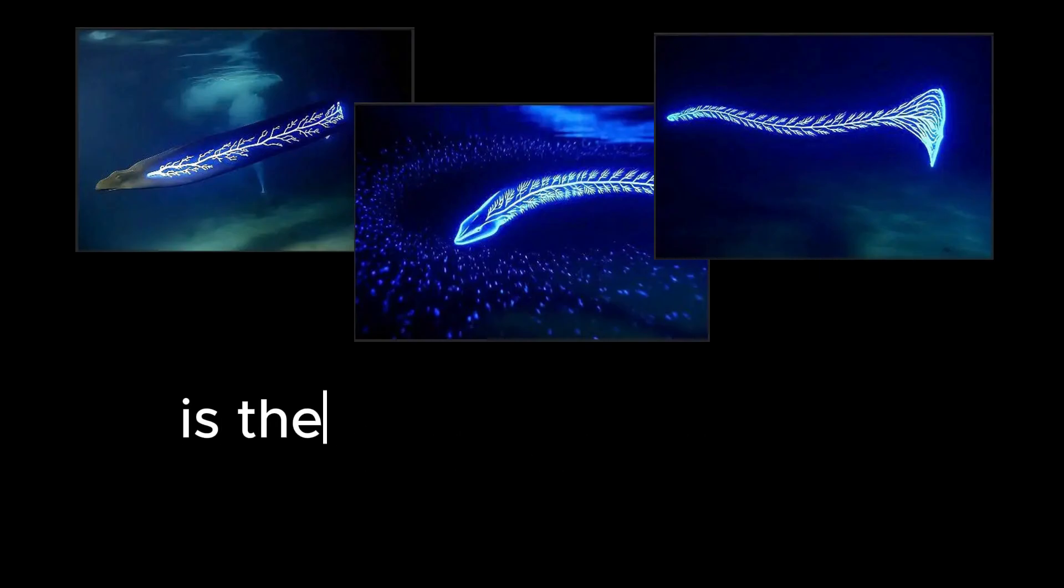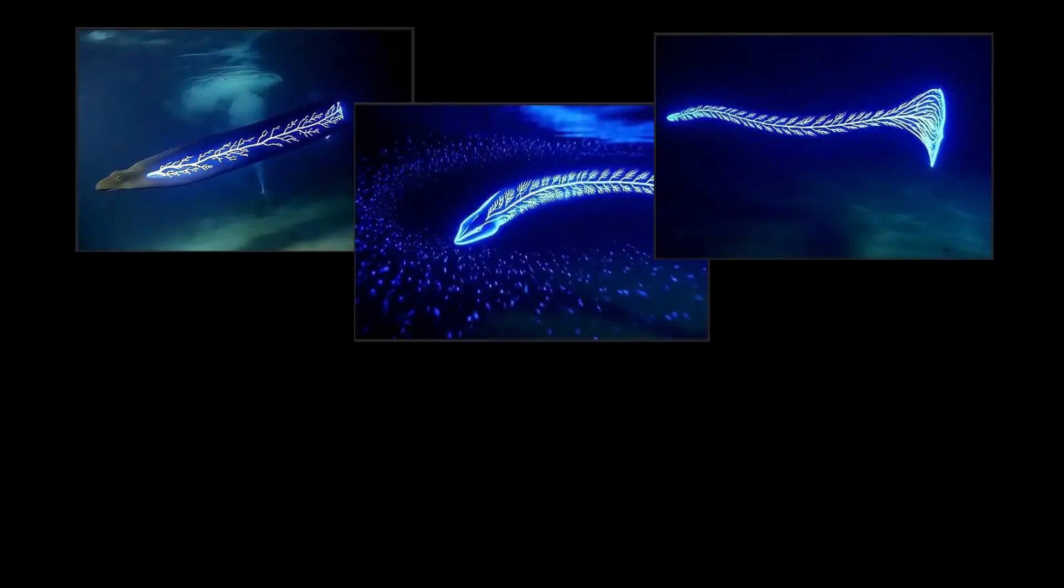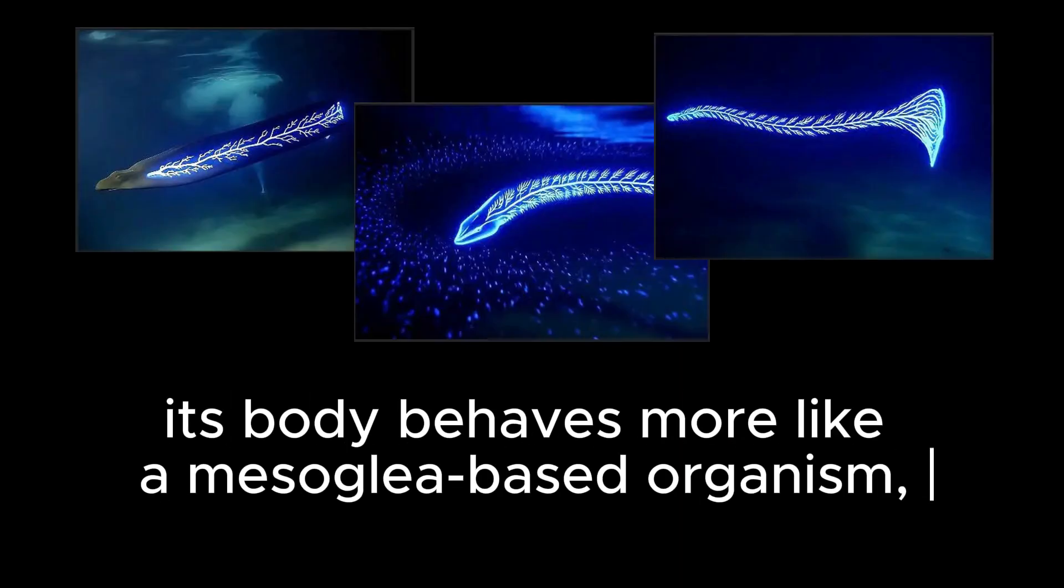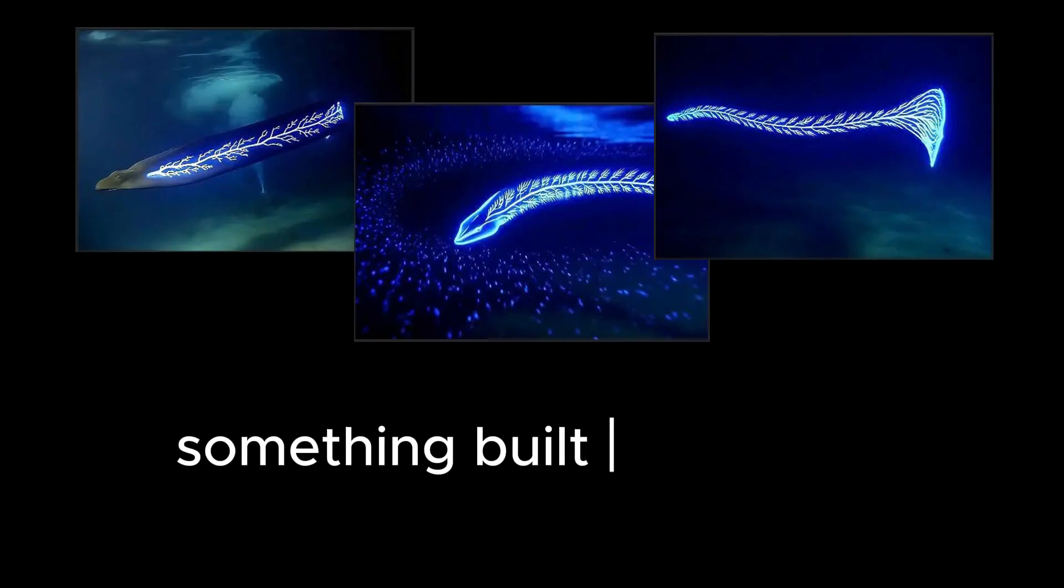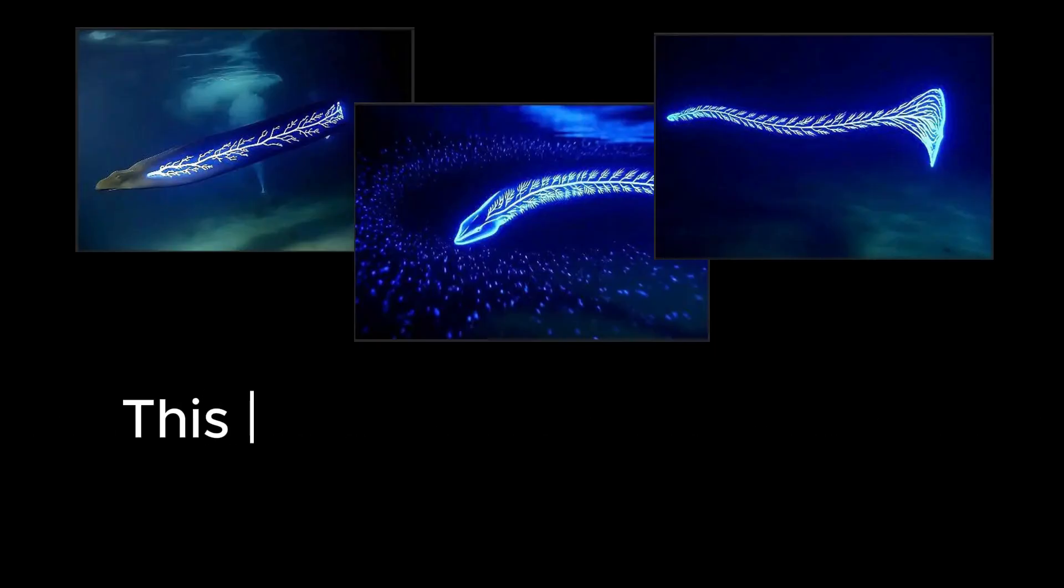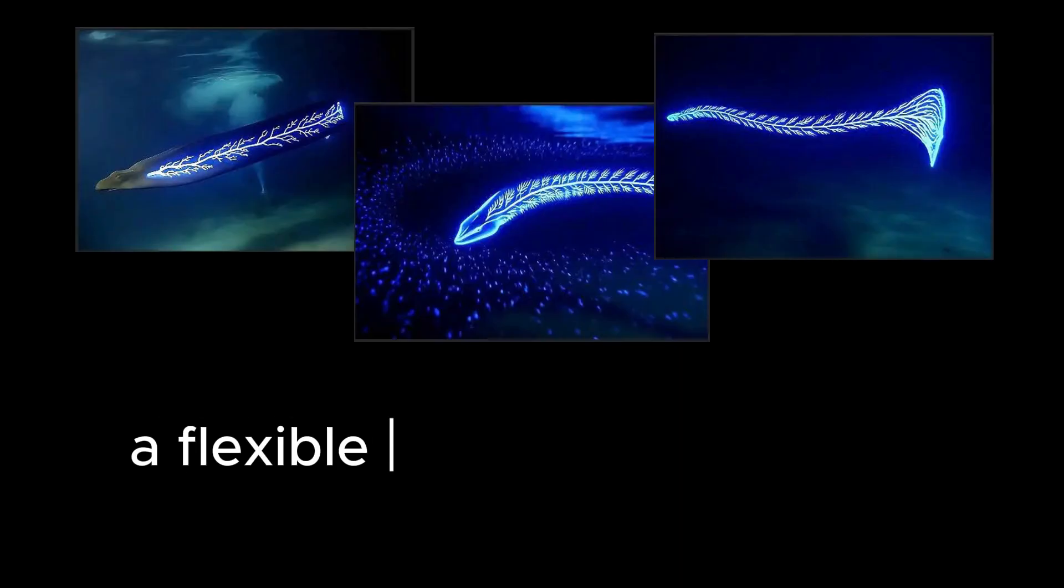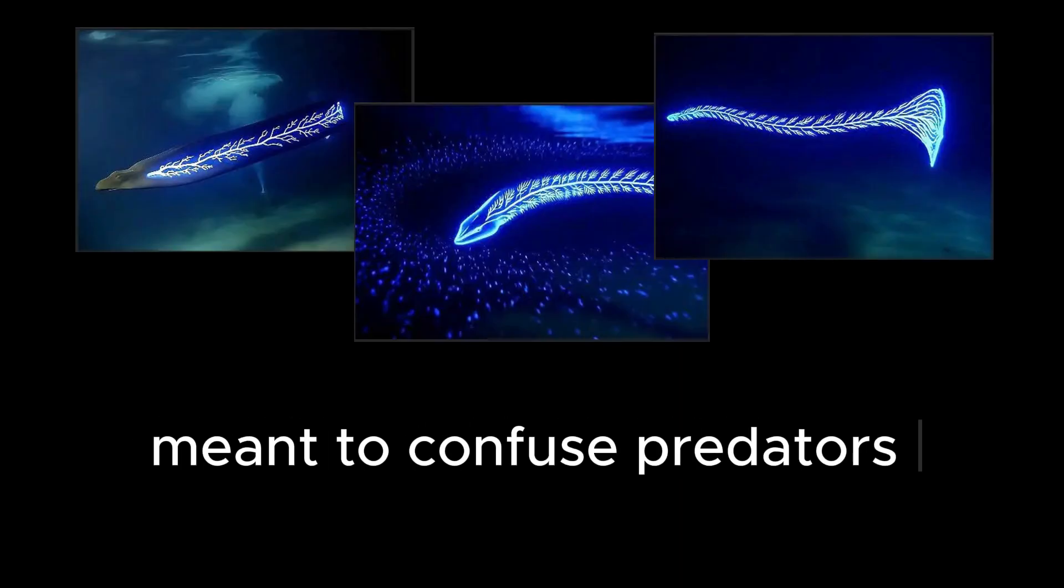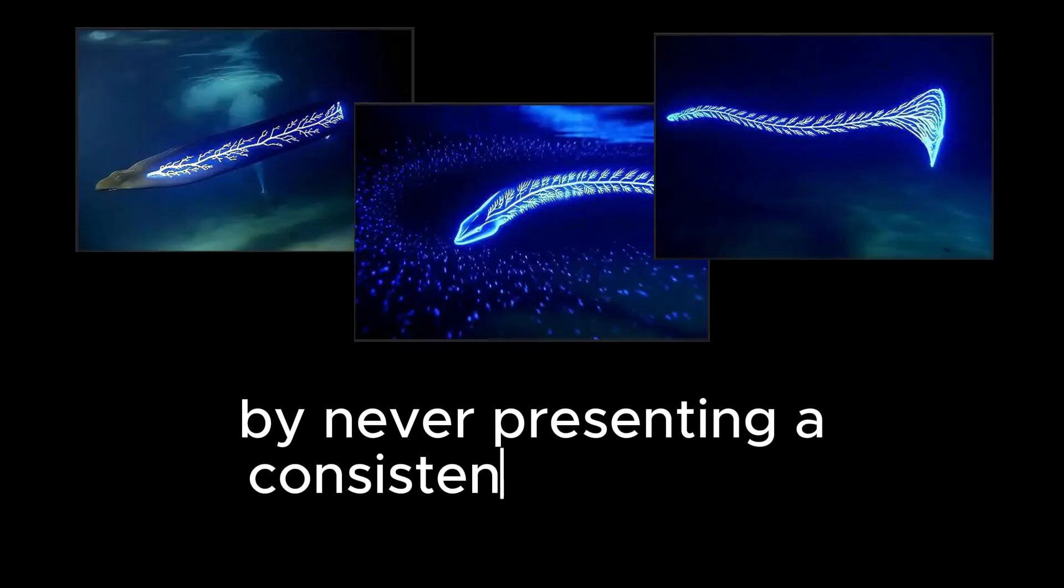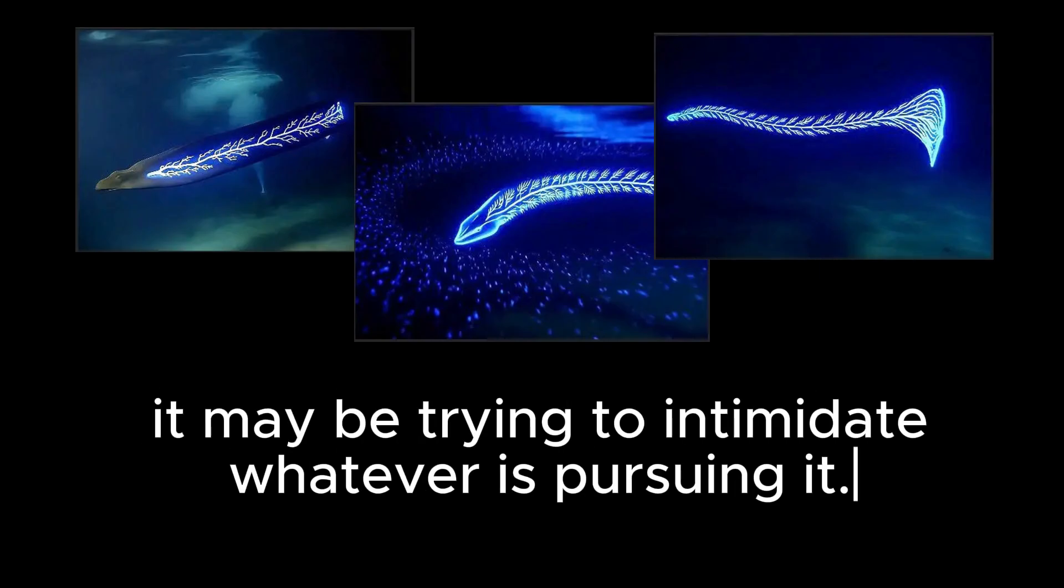What's striking is the absence of anything resembling a skeletal framework. Its body behaves more like a mesoglia-based organism, something built to deform rather than maintain a fixed anatomy. This transformation reinforces the earlier theory that the creature alters its shape deliberately, a flexible defense mechanism meant to confuse predators by never presenting a consistent silhouette. And it may not only be defending itself, it may be trying to intimidate whatever is pursuing it.